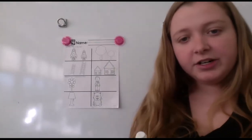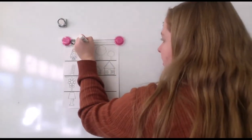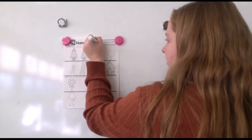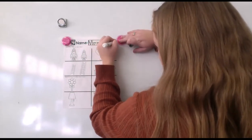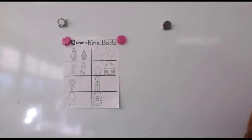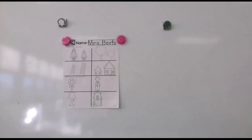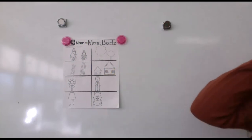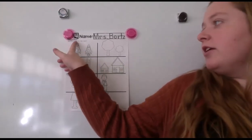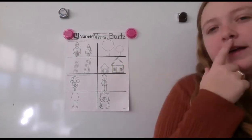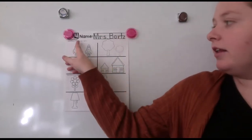First, we are going to write our names on top and then we stop. Let's read the directions together. The directions say color the taller object. Another way to say taller, remember, is bigger. So they want us to color the bigger objects, but we're gonna use the word taller. When you're thinking about the word taller, just think of the word bigger.